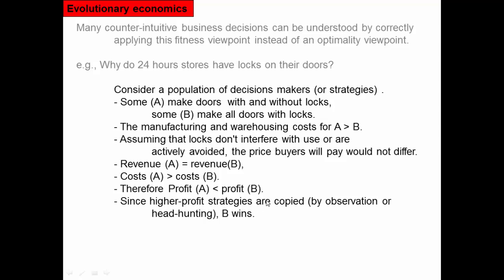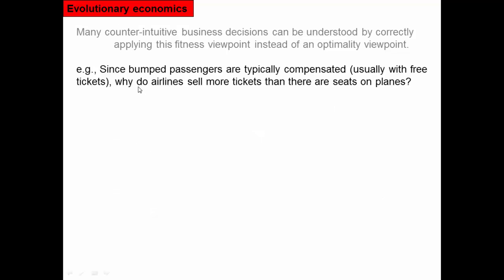Higher profit strategies get copied. If you have a bunch of different companies and they observe this, Strategy B will reproduce and in the future will be the one that wins. When we think about the details of what influences fitness — which for economics is profit — we can see how something like this actually prevails. That's a second example of evolutionary economics in action.